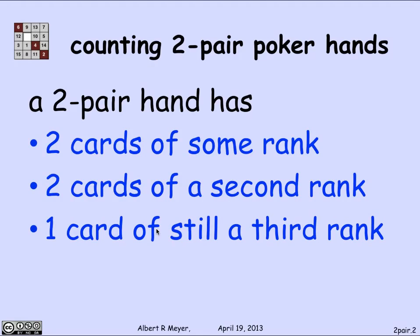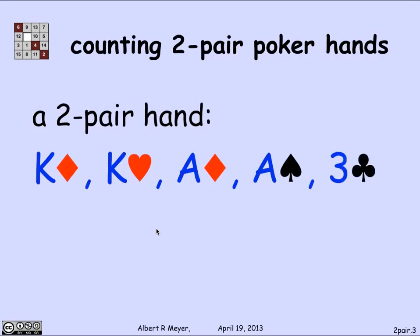Here's a typical two-pair hand. There are two kings, both of rank thirteen — a king of diamonds and a king of hearts. There are four suits: diamonds, hearts, spades, clubs. There's also a pair of aces — an ace of diamonds and an ace of spades. And finally the loose card: a three of clubs, a third rank that doesn't match the kings or the aces.